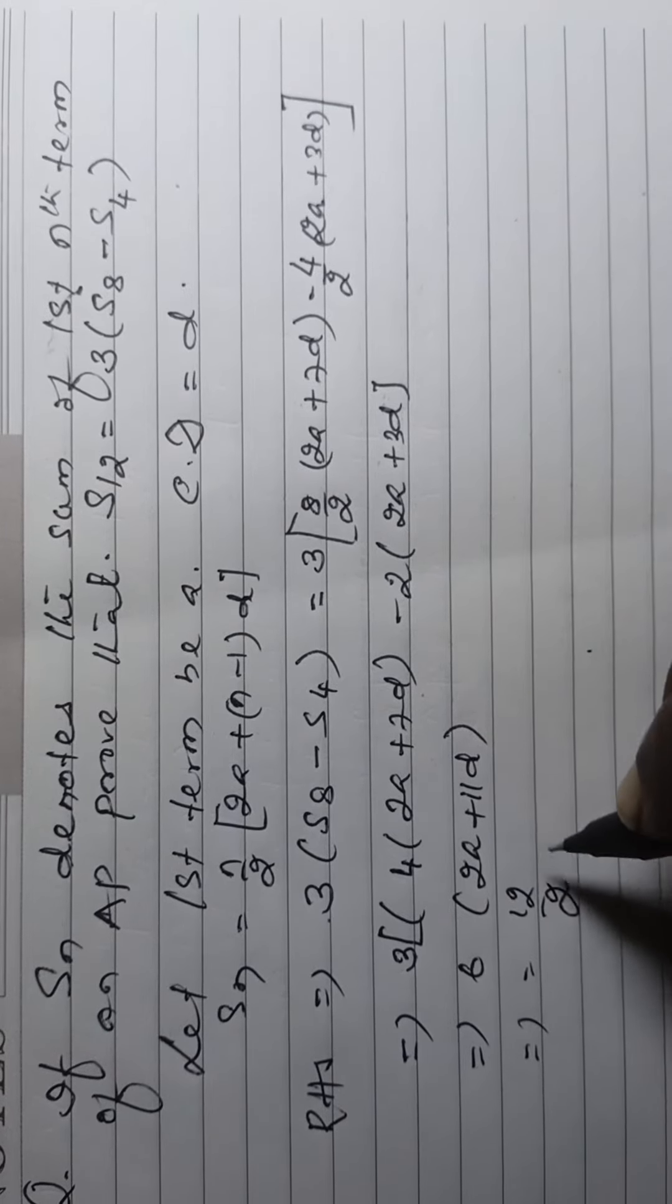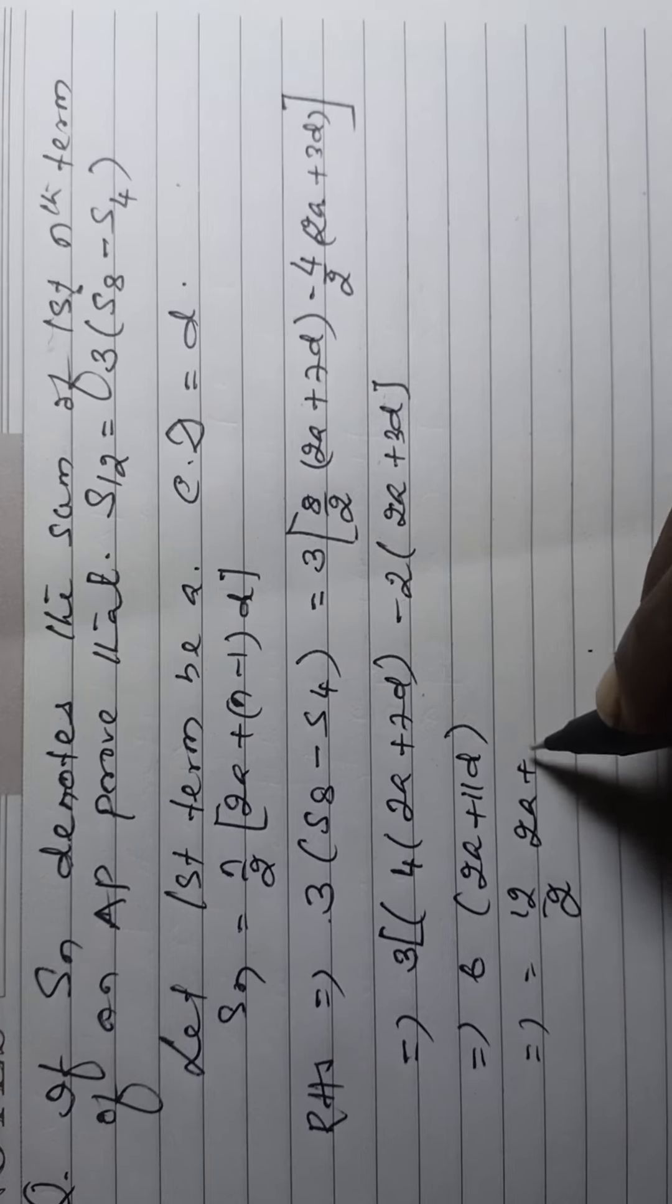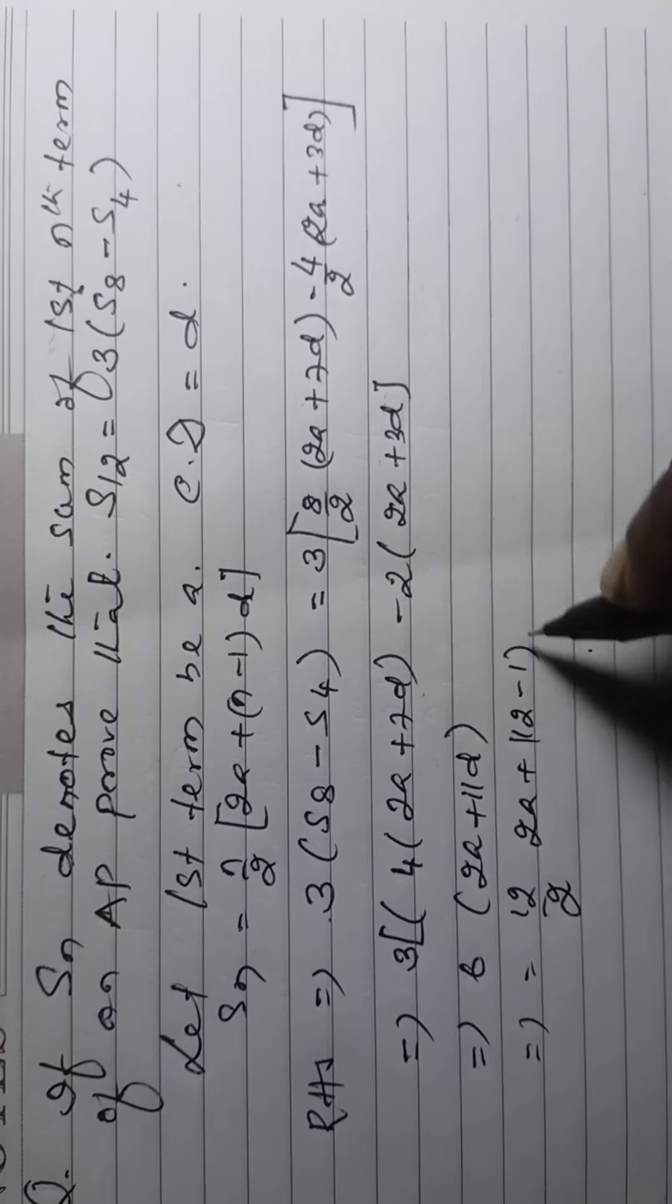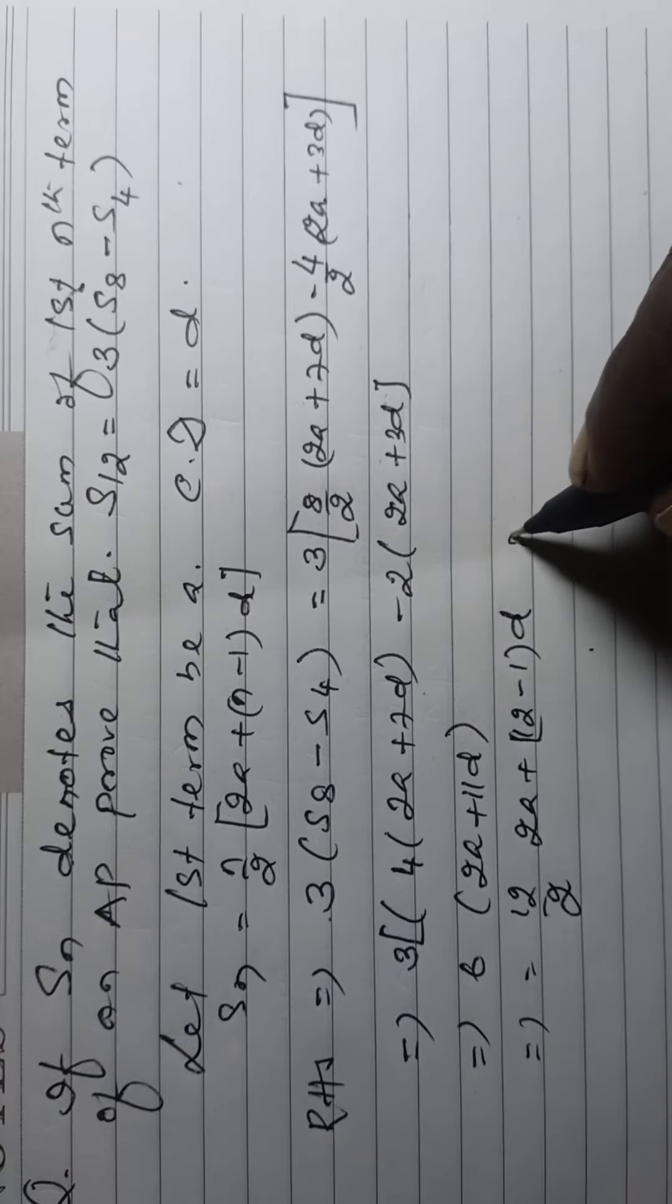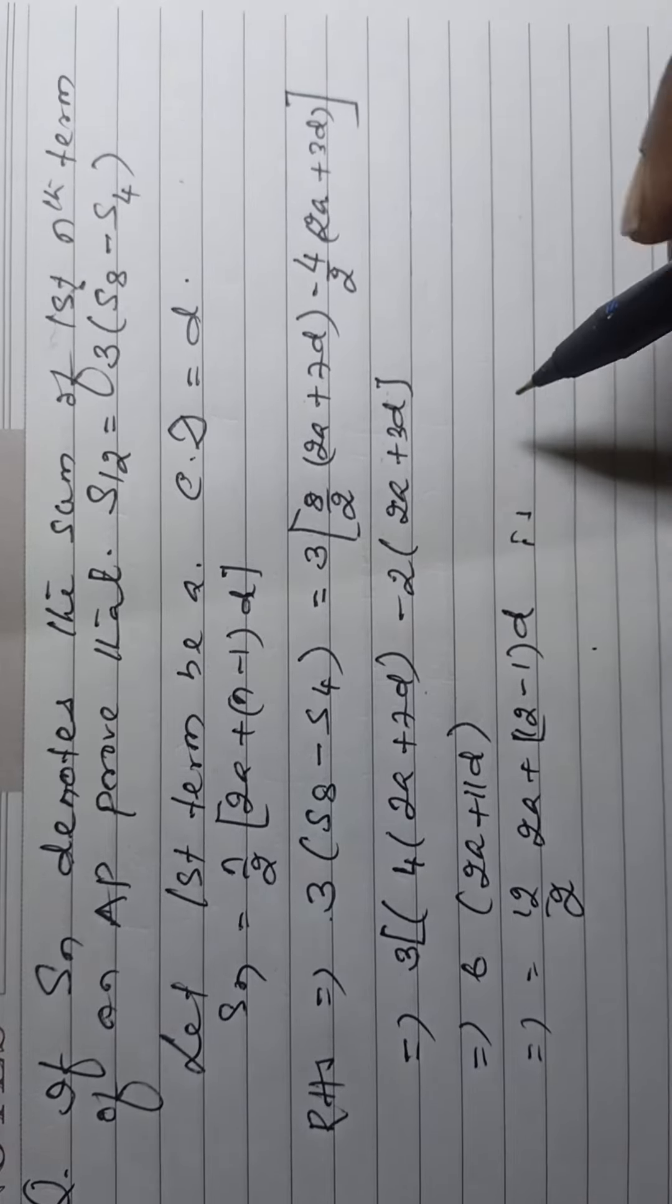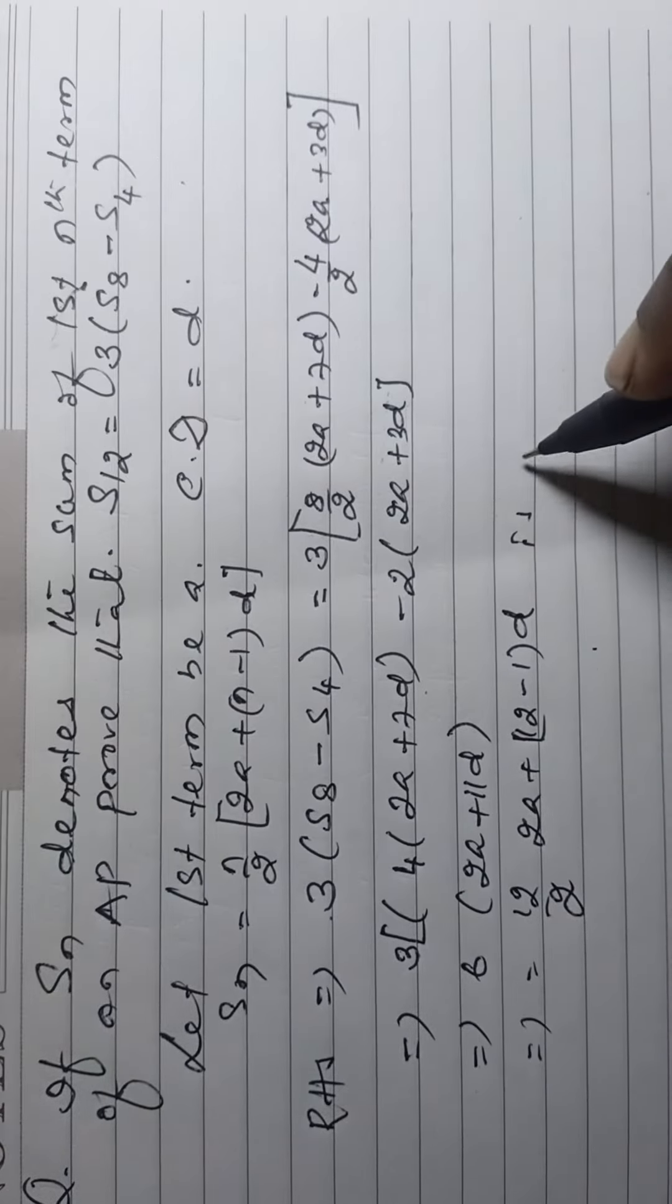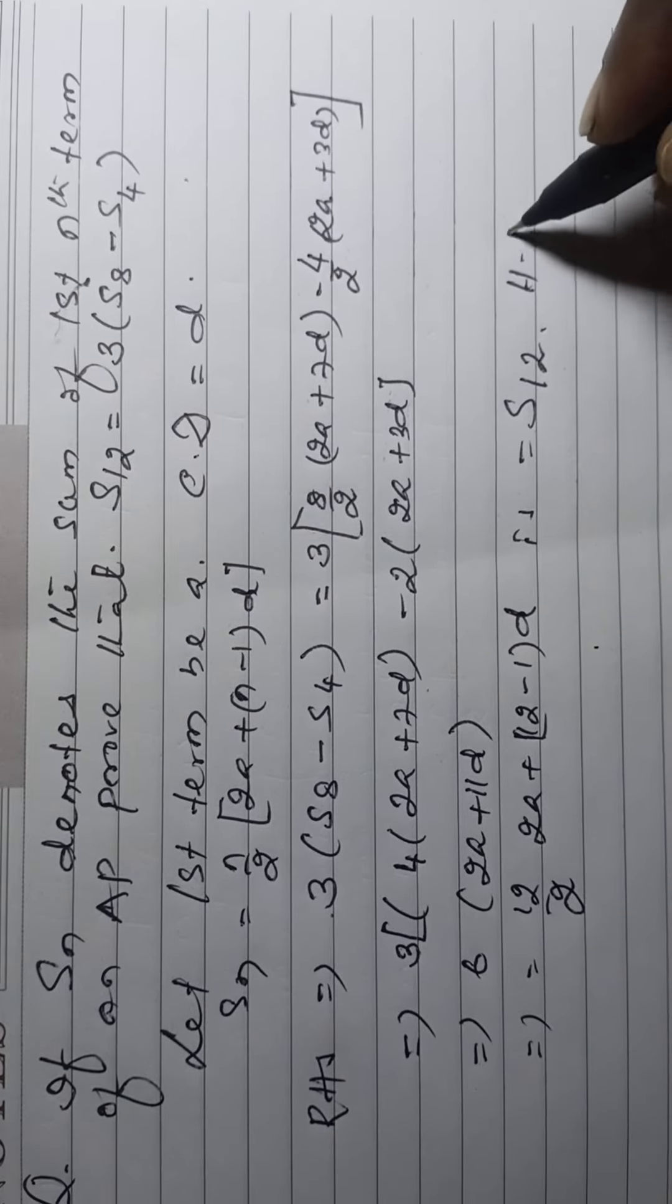Then we can develop like 6, 12 by 2, 2A plus 12 minus 1 into D is sum of 12th term, that is S12, hence proved.